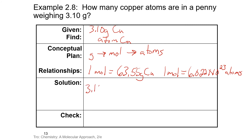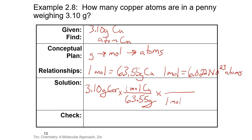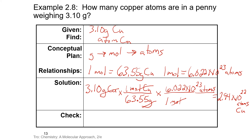We start with our 3.10 grams. We want our grams to cancel, so 63.55 grams goes on the bottom and 1 mole of copper goes on top. Grams cancel; now we want moles to cancel, so 1 mole goes on the bottom and Avogadro's number goes on top. Moles cancel, leaving us with atoms. Because we have much less than 1 mole of copper, it makes sense that our value is less than Avogadro's number.